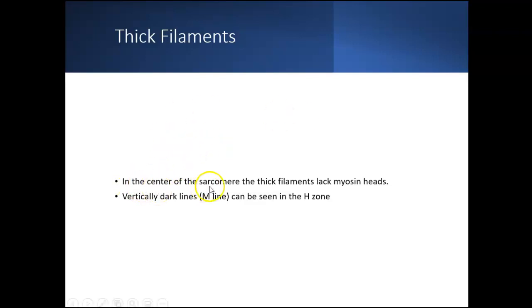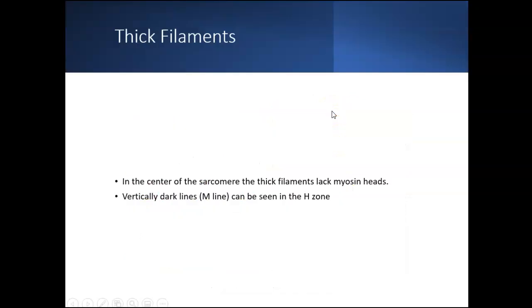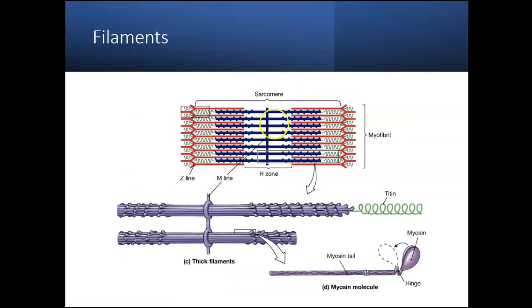In the center of the sarcomere, the thick filaments lack myosin heads — myosin heads are to the sides. In the middle where there are no heads, you have the H-zone, and they create these dark lines called M-lines. So in the H-zone there is myosin, but no myosin heads. If you take the thick filament and blow it up, you can see the myosin heads on the sides and just tails in the middle.